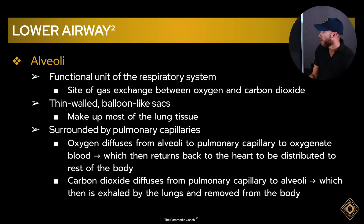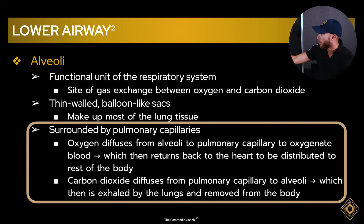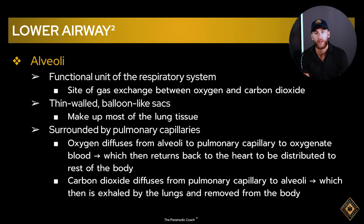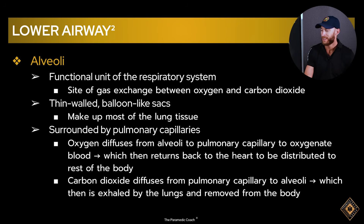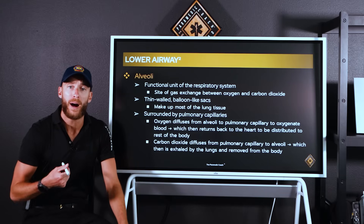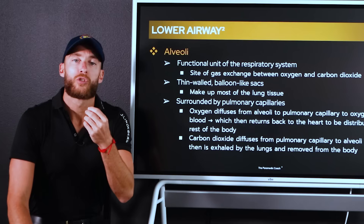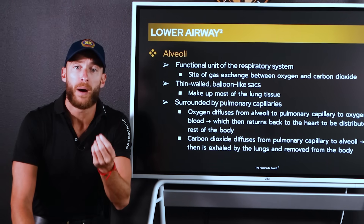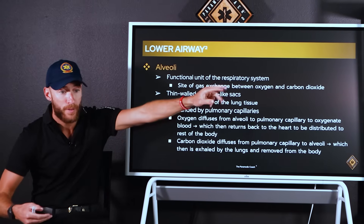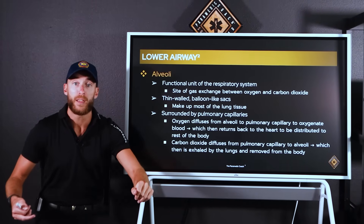Key point: the alveoli is surrounded by the pulmonary capillaries. The capillaries are part of the circulatory system and blood movement. So how do these two systems become intertwined? We need to get oxygen into the bloodstream. We have a heart in our body that pumps so we can move blood around and deliver rich, oxygenated blood to all the little cells — all the way out to my fingertips and all the way down to my feet.